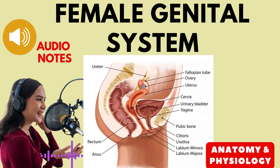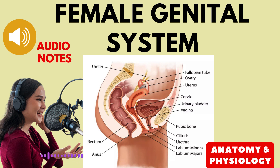It has three anatomical divisions: the fundus, the upper convex part; the body, the central part; and the cervix, the lower neck-like part. The fundus is situated just above the entrance to the fallopian tubes. The walls of the uterus consist of three layers: the endometrium (inner layer), the myometrium (middle layer), and the parietal peritoneum (outer layer). The uterus plays a vital role in pregnancy, labor, and menstruation.